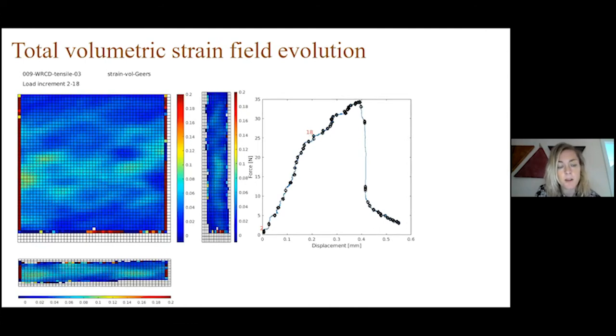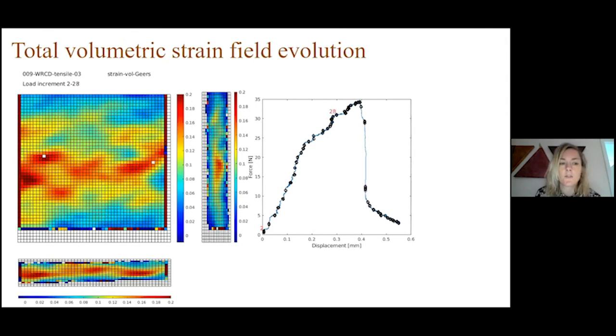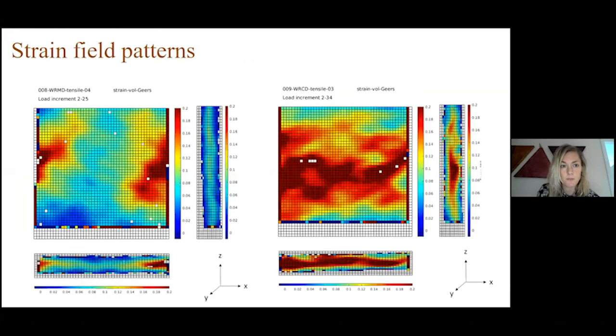For comparison, I will also show the volumetric strain field evolution of a sample tested in cross-direction. We see that the strain field patterns look different in this sample. They are more continuous between the notches across the sample. When tested in machine direction, the strain fields localize around the notches and seem to propagate towards the center of the sample in diagonal patterns. While in cross-direction, the strain fields are more continuous between the notches and they are less aligned.